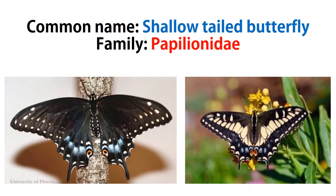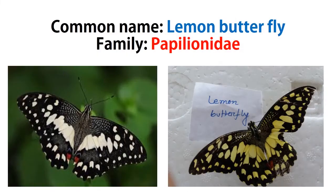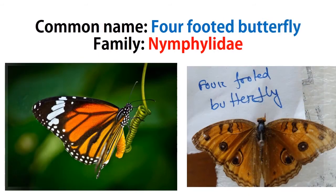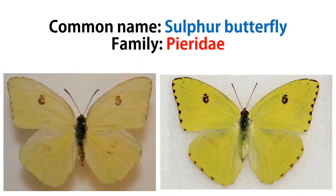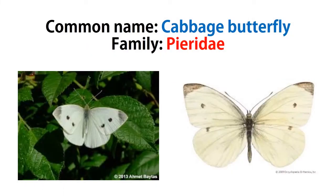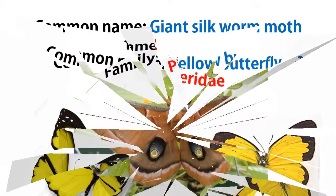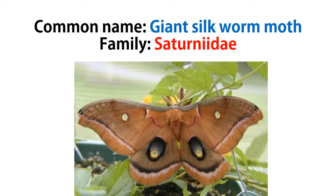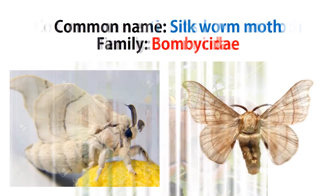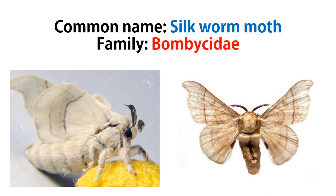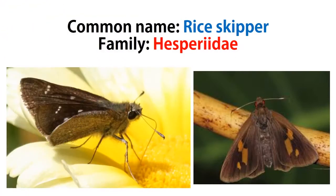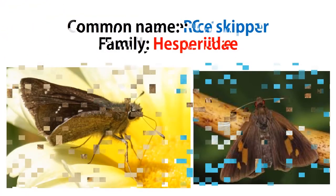Now have a look at: swallowtail butterfly, family Papilionidae; hooded butterfly, family Nymphalidae; cabbage butterfly, also family Pieridae; silk worm moth, family Saturniidae; and skipper, family Hesperiidae.